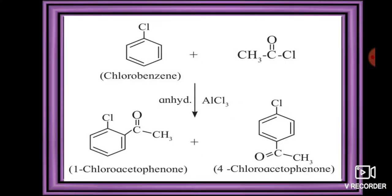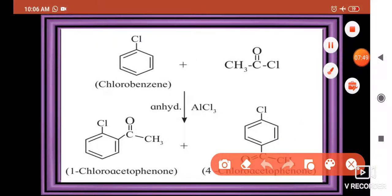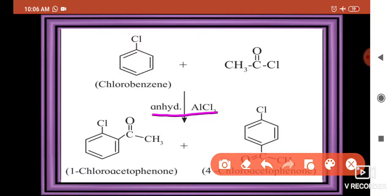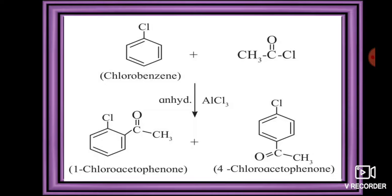In Friedel-Crafts acylation: chlorobenzene reacted with CH3COCl in the presence of anhydrous AlCl3 gives 1-chloroacetophenone and 4-chloroacetophenone. Of these, 4-chloroacetophenone is the major product and 1-chloroacetophenone is the minor product. The CH3CO group attaches at the ortho and para positions as an electrophile.